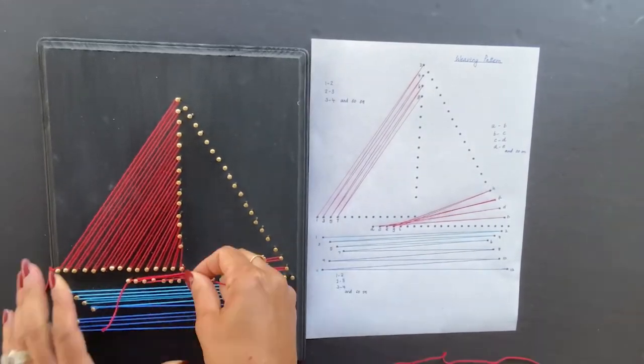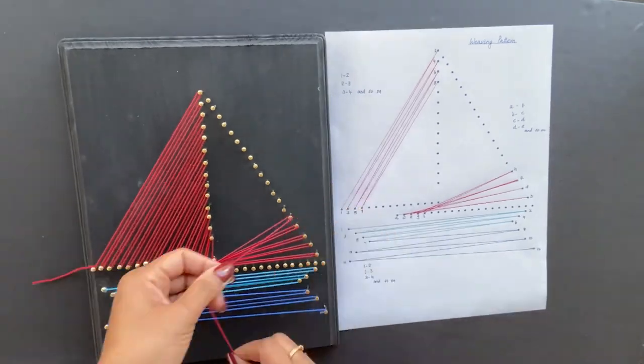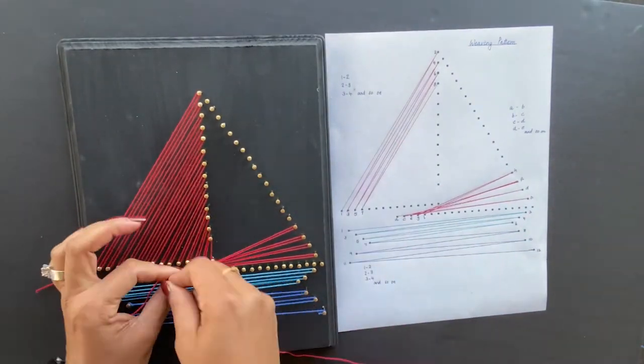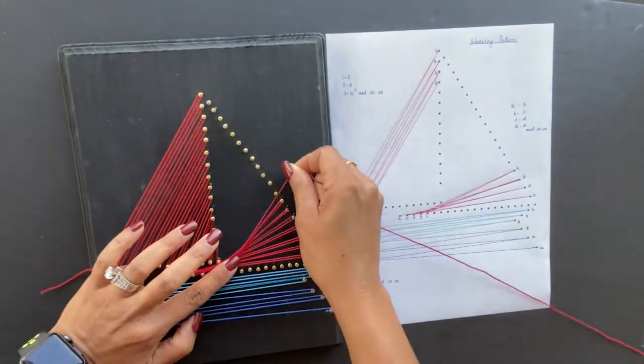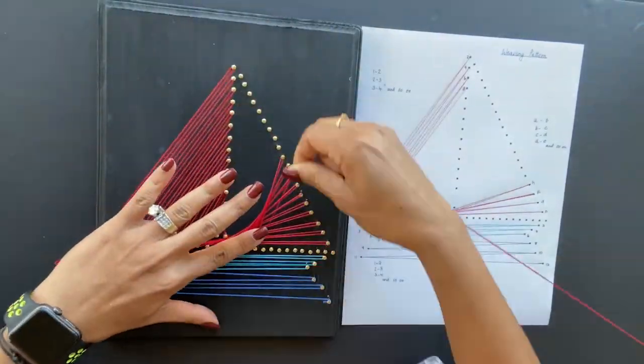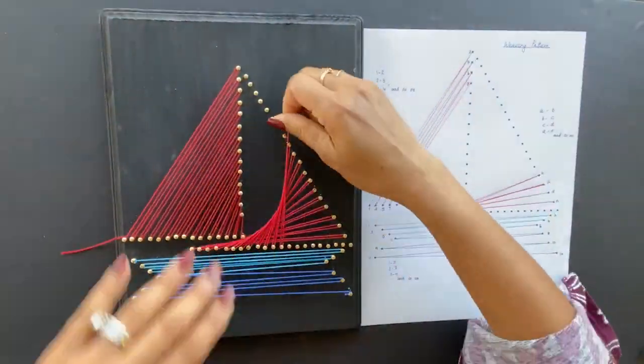For the second half of the sail, use the sequence of A to B, B to C, C to D, and so on. Continue this pattern until this half of the sail is done.